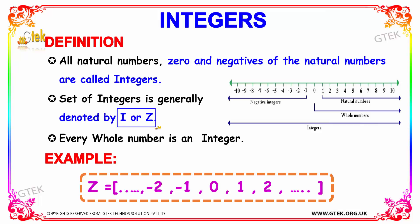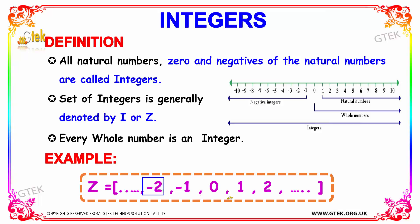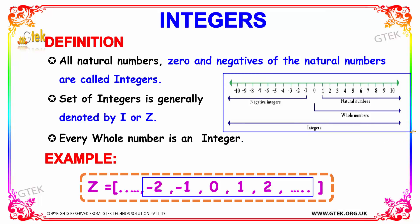Every whole number is considered to be an integer. Examples of integers include: minus 2, minus 1, 0, 1, and so on. You can also find how the integer example is depicted clearly here.